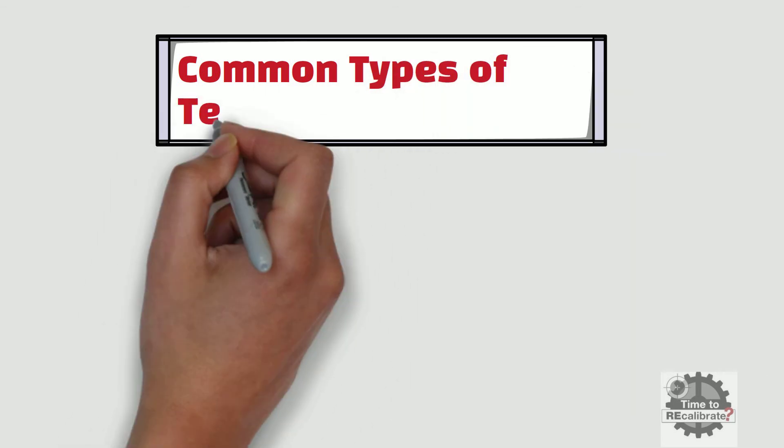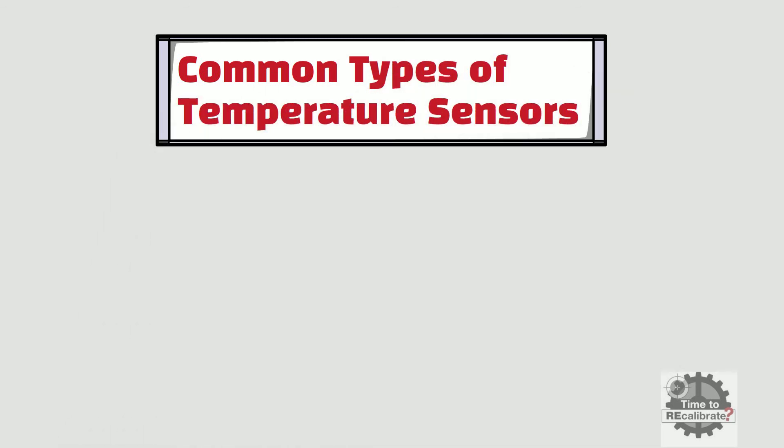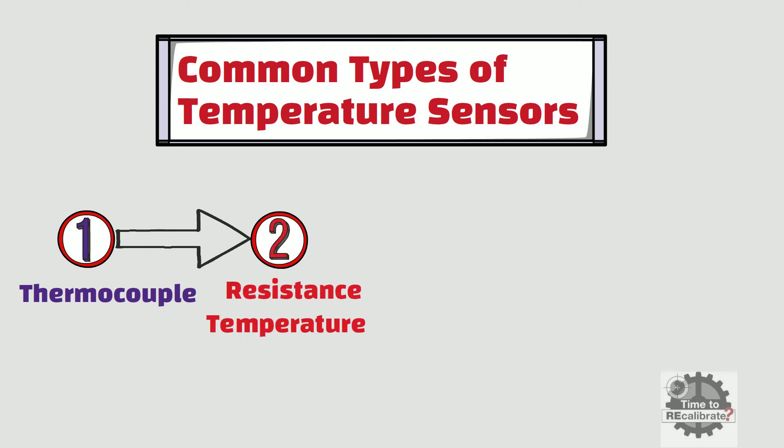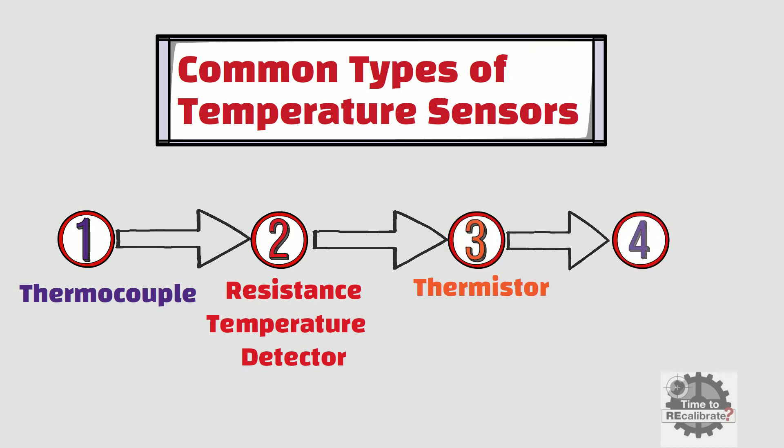In this section, we will learn about all four common types of temperature sensors. The first type is thermocouple. The second type is resistance temperature detector or RTD. The third type is thermistor, and the fourth type is radiation sensor.